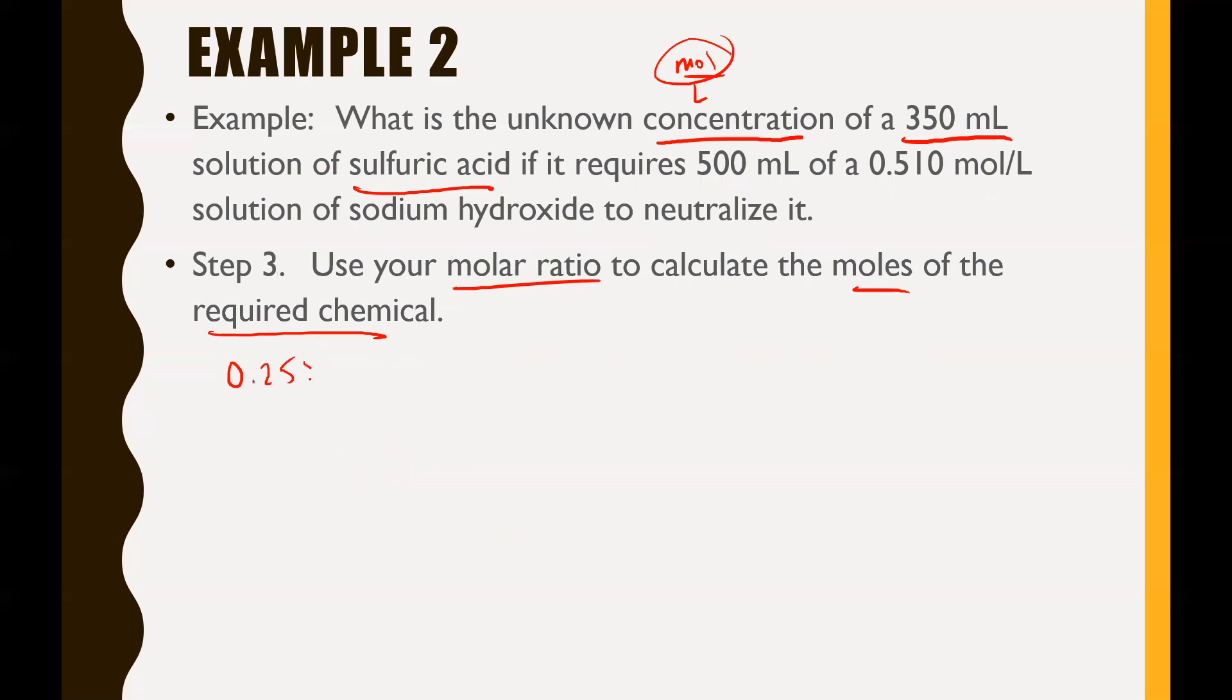So 0.255 divided by 2 is going to give us 0.1275 moles. That's our number of moles of H2SO4. So we now know how many moles we have of H2SO4.